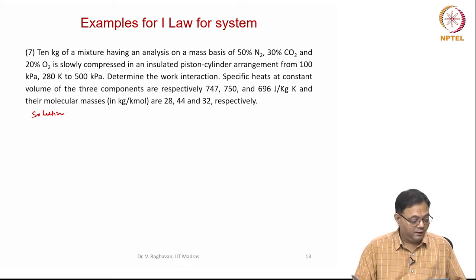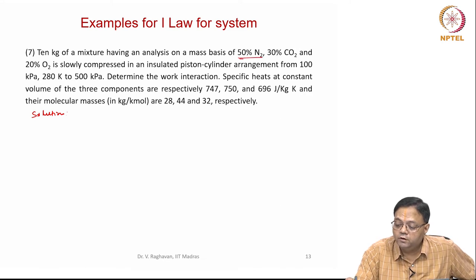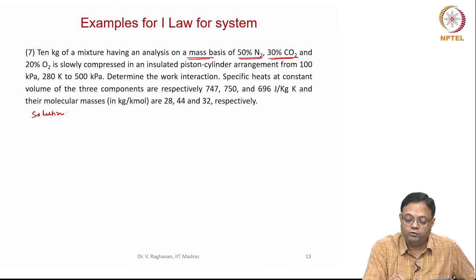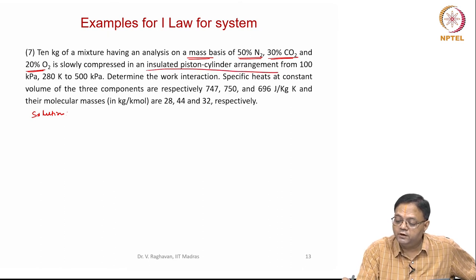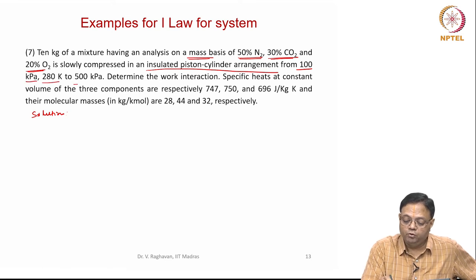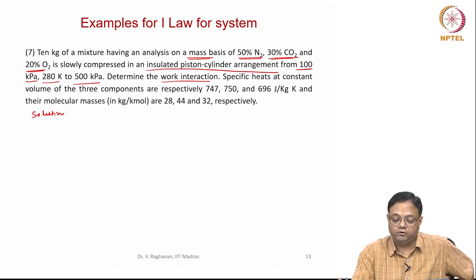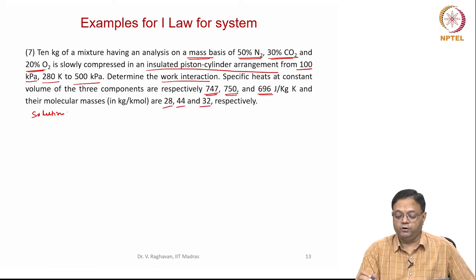Next problem: 10 kg of a mixture having composition on a mass basis of 50% nitrogen, 30% CO2, and 20% O2 is slowly compressed in an insulated piston-cylinder arrangement from 100 kPa, 280 Kelvin to 500 kPa. Determine the work interaction. Cv for the three components are 747, 750, and 696 J/kg·K, and molecular weights are 28, 44, and 32 respectively.